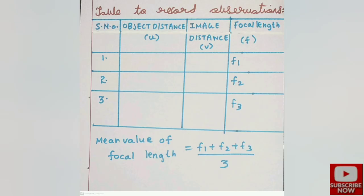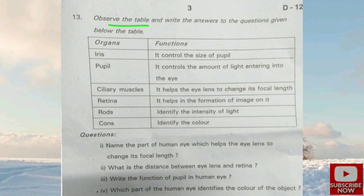For the observation table, draw columns for: Serial Number, Object Distance (u), Image Distance (v), and Focal Length (f). Record three or four readings giving f₁, f₂, and f₃. Calculate the mean focal length as (f₁ + f₂ + f₃) / 3 to get the average focal length of the concave mirror. Also draw the ray diagram showing sunlight converging at the focal point.